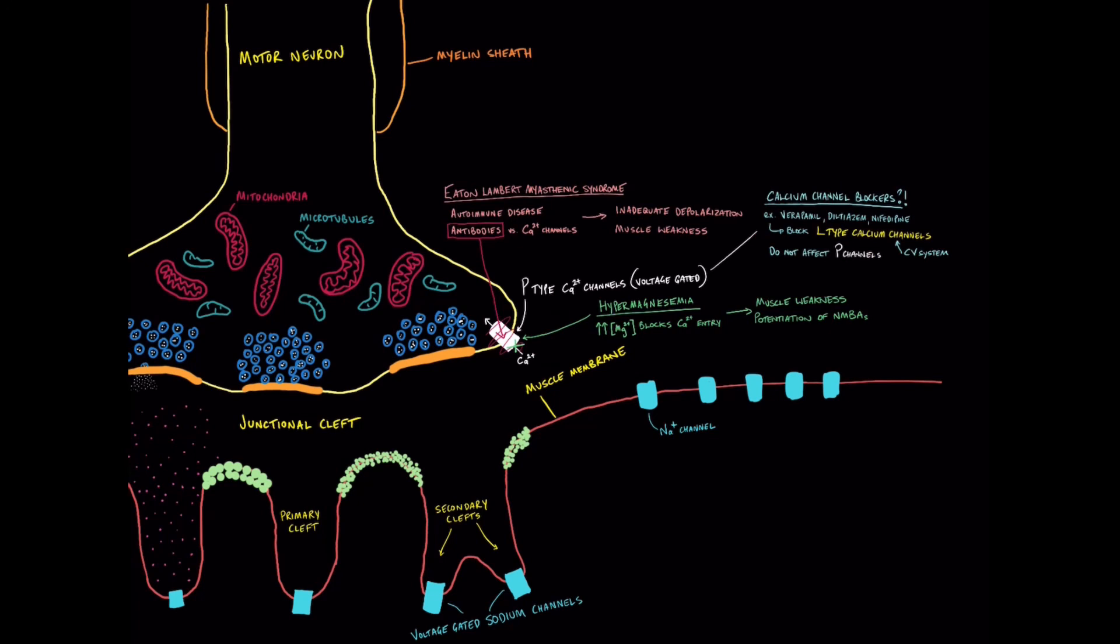and they don't really have much of an impact at all on P-channels, the P-type calcium channels that we're talking about here. So if you were thinking that like I was, good question, good thing to think about, but it turns out that they don't really have much of an impact on these P-type channels, which is great, otherwise all those patients would have muscle weakness and potentiation of neuromuscular blockers. So those are the calcium channels, really important to neuromuscular physiology. A couple of applications that you can think about and considerations for anesthesia life and hopefully that's helpful.